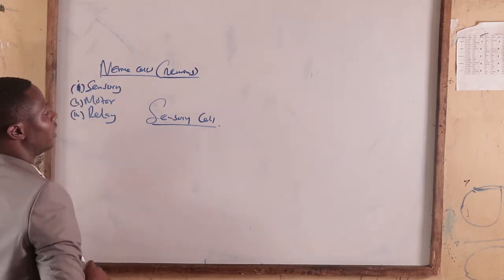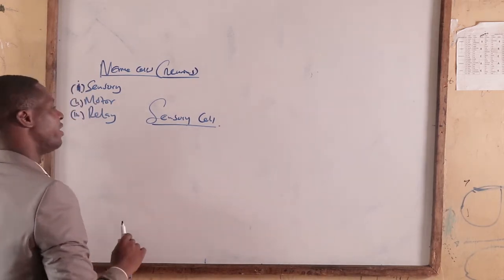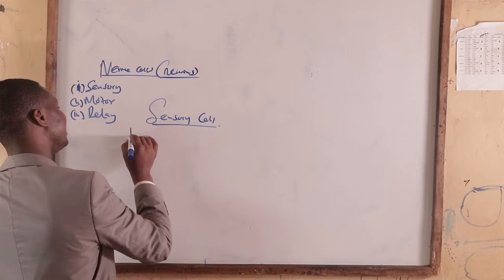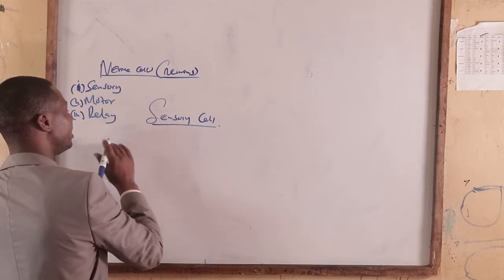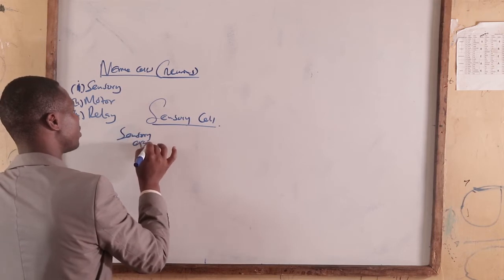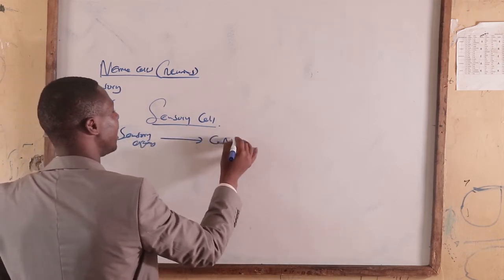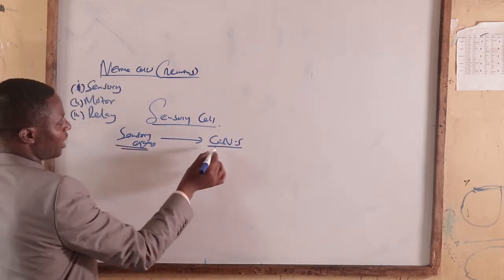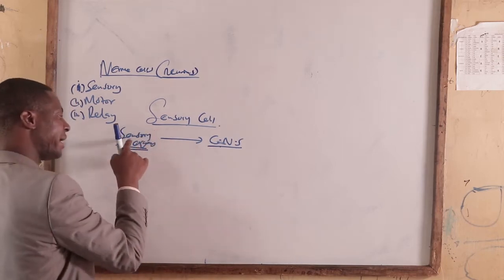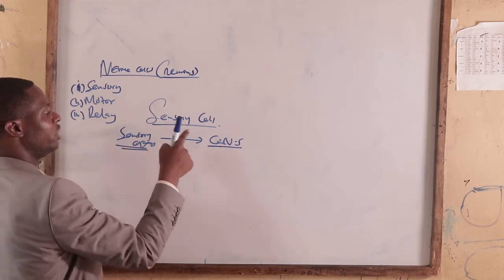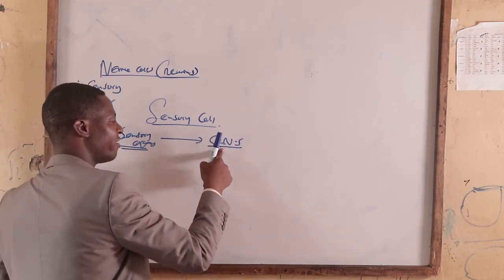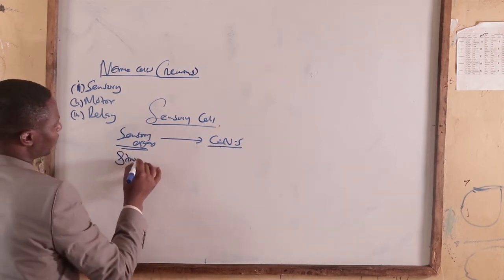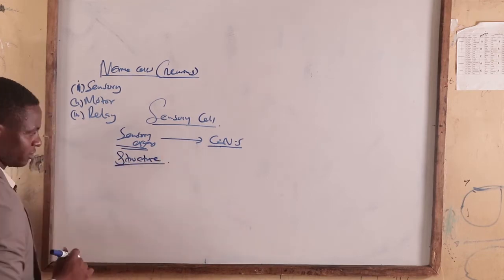The function of sensory nerve cells is to coordinate between sensory organs and the central nervous system. That is, they transmit an impulse from the sensory organs into the central nervous system for interpretation. So what is the structure of sensory cells?